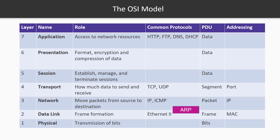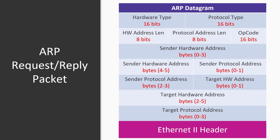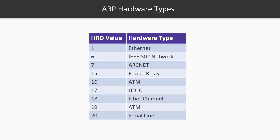So how does an ARP packet look like? In this datagram, we have fields such as the sender hardware address and the target hardware address, which are the MAC addresses. We also have the sender protocol address and target protocol address, which are the IP addresses.